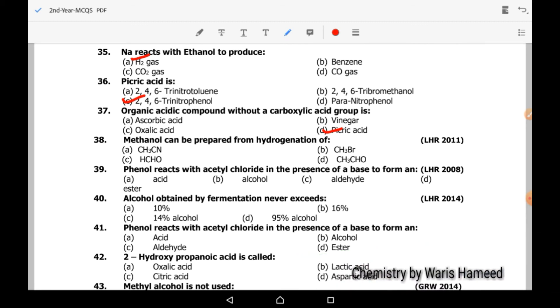Methanol can be prepared from hydrogenation of formaldehyde. Option C is correct. In this case, formaldehyde also has one carbon and methanol has also one carbon. And it can be easily converted into methanol.